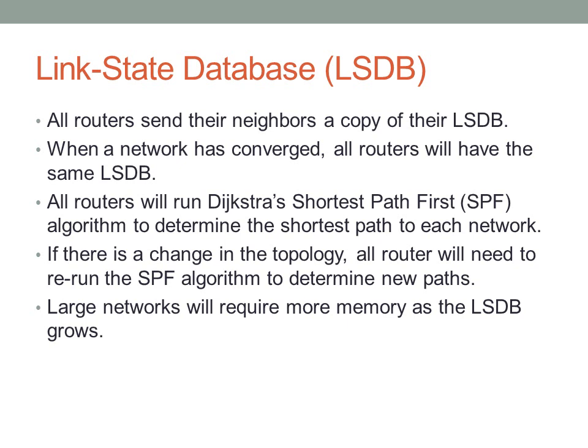All routers have to send their adjacent neighbors a copy of their link state database, which contains all the interfaces in the network that the current router knows about. It will look for duplicate interfaces when it receives a link state database from another router. By the time the network converges, all routers will have the same link state database. All routers also run the SPF algorithm to determine the shortest path to each network. If there's a change in the topology, it has to rerun the SPF algorithm. Large networks have huge link state databases, so the goal is to minimize the size of the link state database.